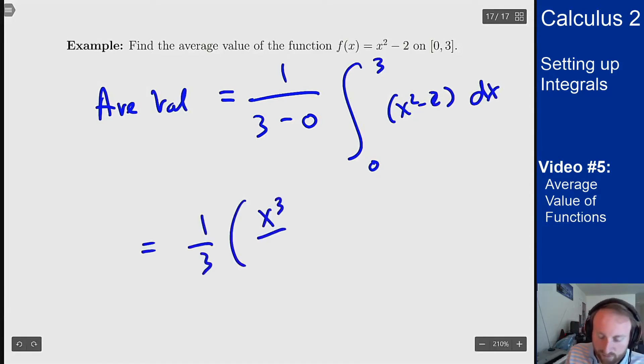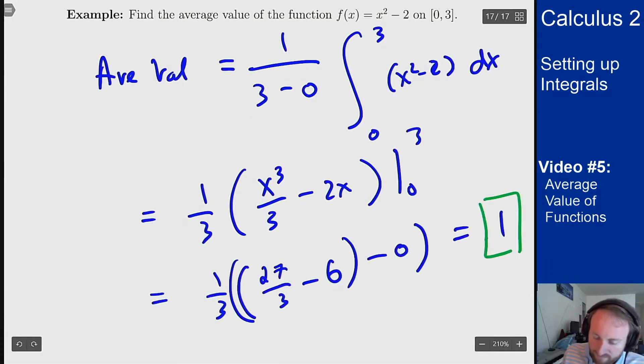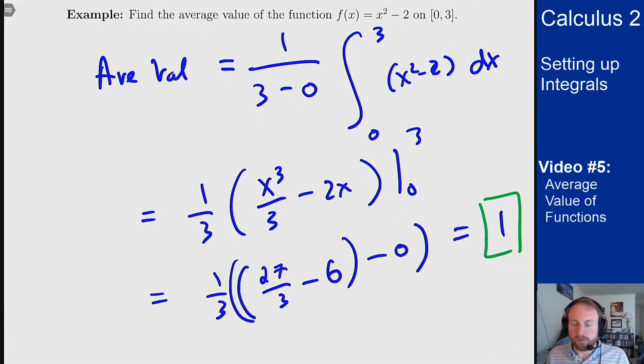We can then find the anti-derivatives and then plug in our endpoints, and that comes out to 1 on this interval. So that's the idea. That's how you find the average value of functions and that's sort of what the mean value theorem for integrals is and how it relates to this idea of adding things up and combining things together using integrals to help solve problems.